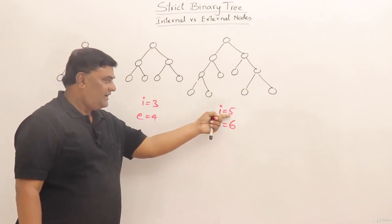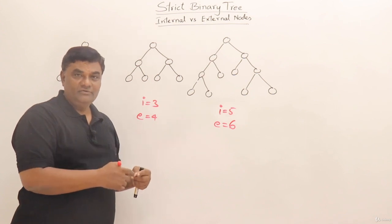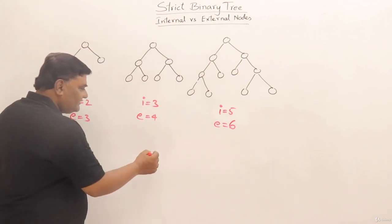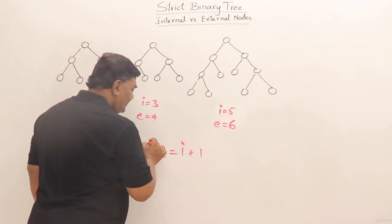And if it is 5, then this is 6. So leaf nodes are 1 greater than non-leaf nodes, or external nodes are 1 greater than internal nodes. So we can come up with the formula E is equal to i plus 1.